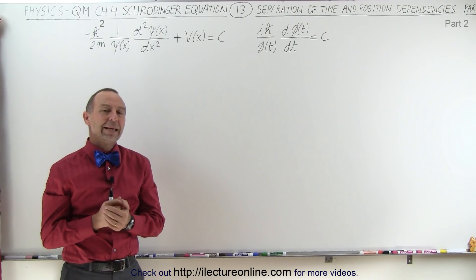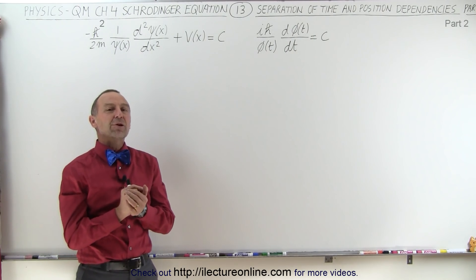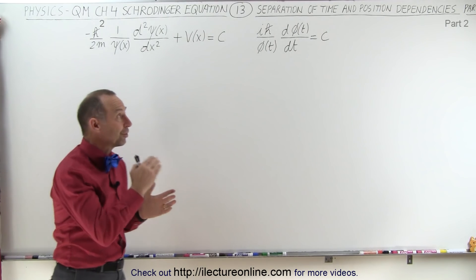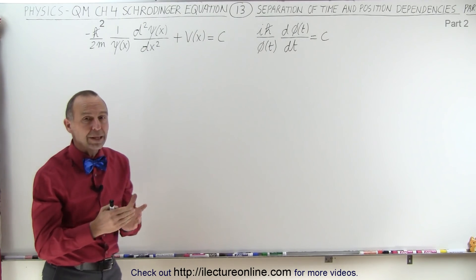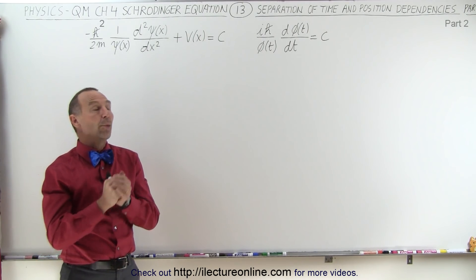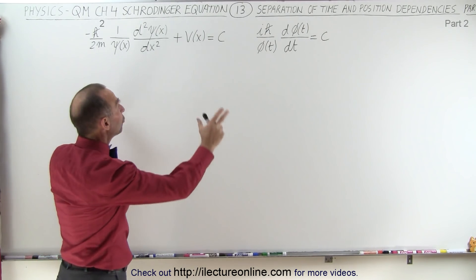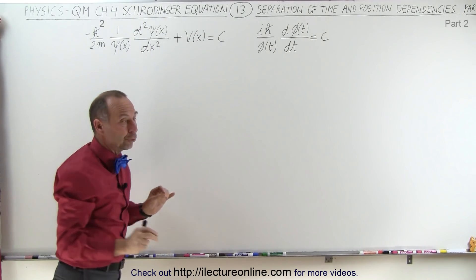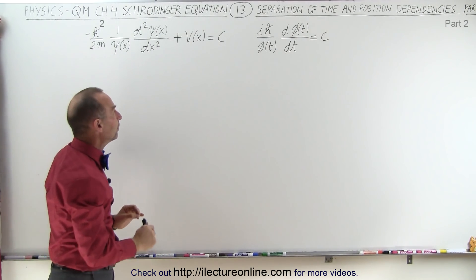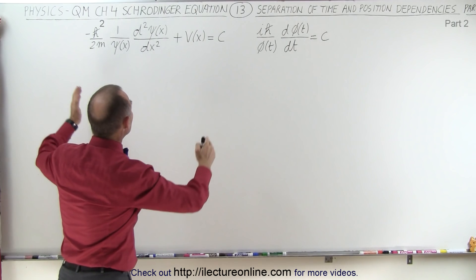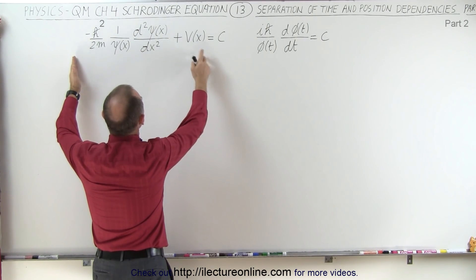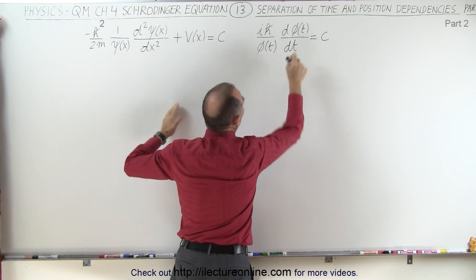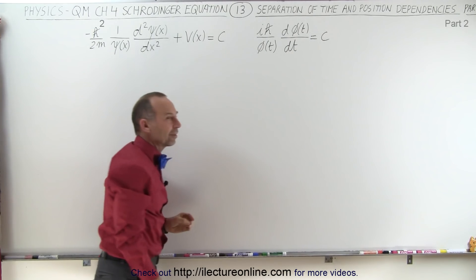Welcome to Electron Line. In the previous video, we started with the separation of the variables, position and time, in the Schrödinger equation. We ended up with these two equations, which were set equal to a constant. We don't know yet what that constant is equal to, but we now have on the left side an equation that only depends on position, and on the right side an equation that only depends on time.